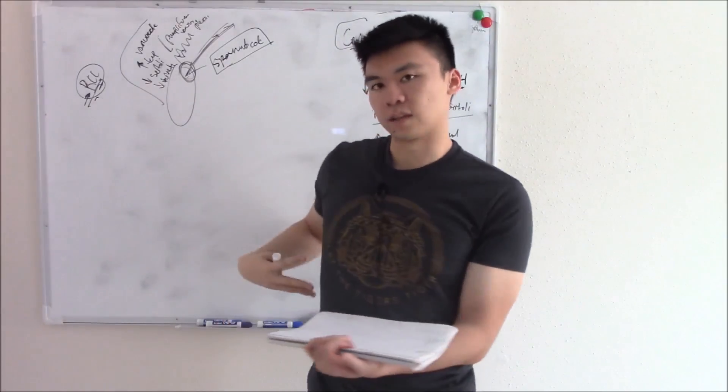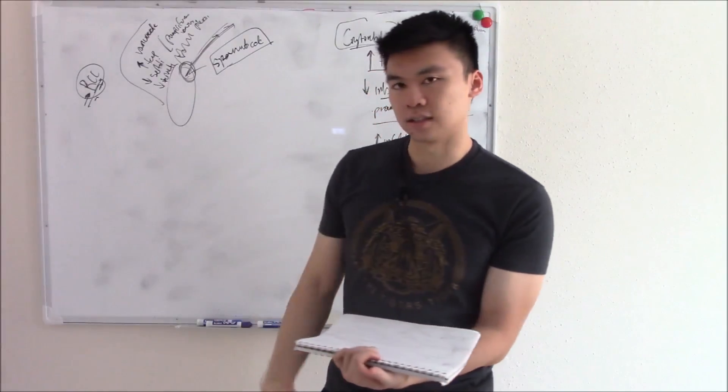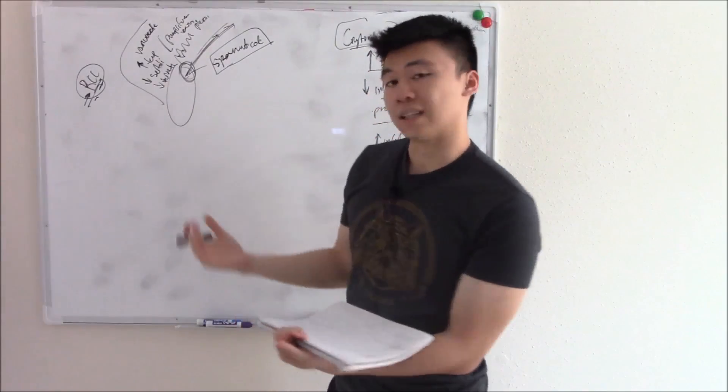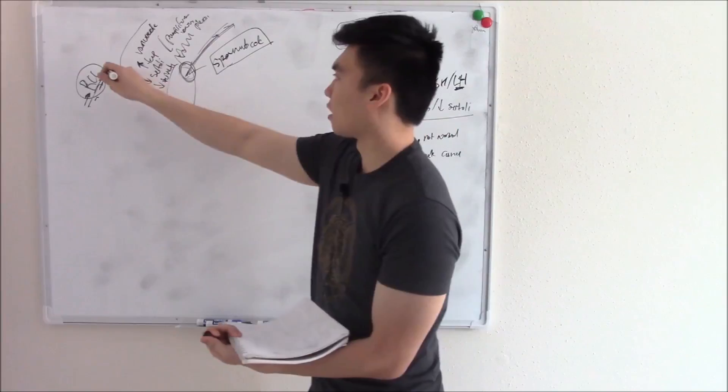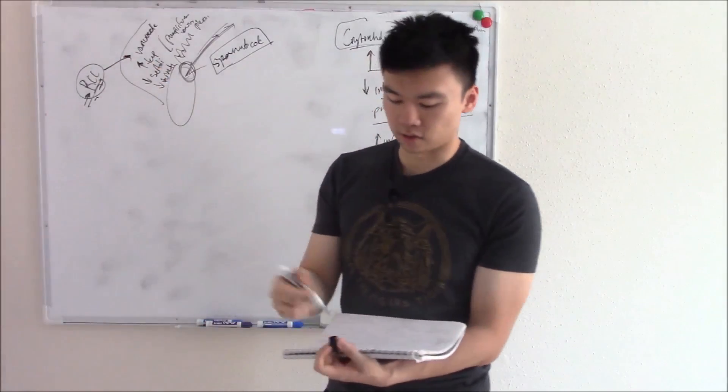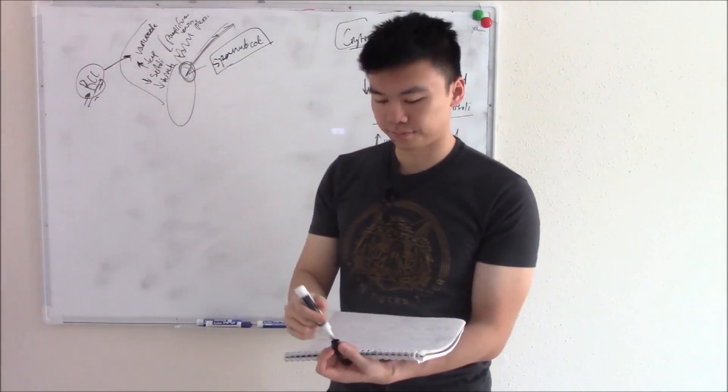So if a patient comes in with a flank mass, has hematuria, and then feels a heaviness in his testes, and you feel a dilation in his testes, you're not caught off guard, you know the association. You can identify RCC and varicocele. Got it?